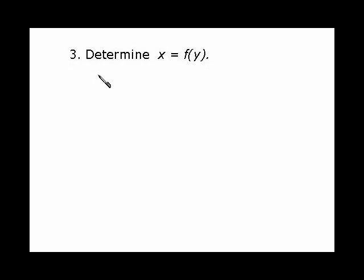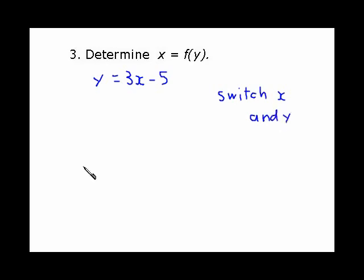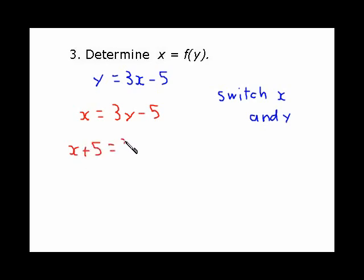For x = f(y), you would have probably done these in Math 20. Starting with the original y = 3x - 5, we simply switch x and y to get x = 3y - 5. Then we isolate the new y: x + 5 = 3y, and then divide by 3, giving y = (x + 5) / 3. You can also write it individually as y = x/3 + 5/3.